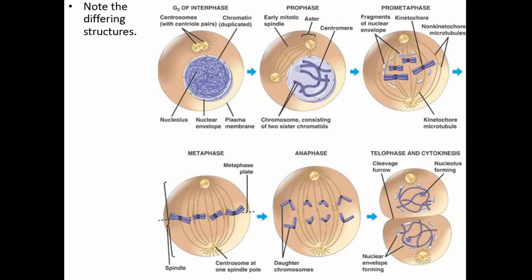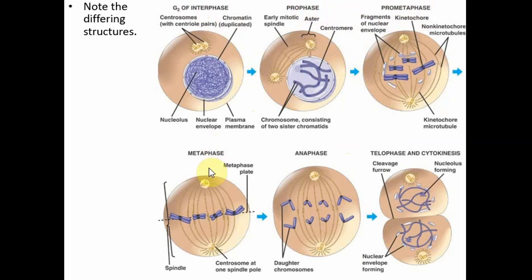In this diagram, we can see a slightly different set of stages. It still starts with interphase, but it divides prophase into prophase and prometaphase. That'll happen sometimes when you see different diagrams, but as you become familiar with the process of mitosis, you'll be able to navigate those new kinds of diagrams. Prophase and prometaphase still go together, and then you have metaphase, anaphase, and telophase. Cytokinesis is also included at the end.